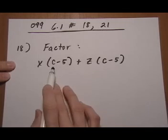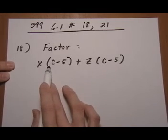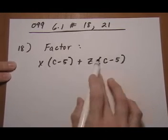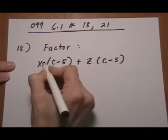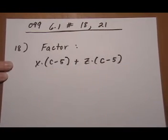Number 18, we want to factor, but one of the factors is an entire binomial. But that's not going to change how we do anything because these are still factors. They're pieces being multiplied together.